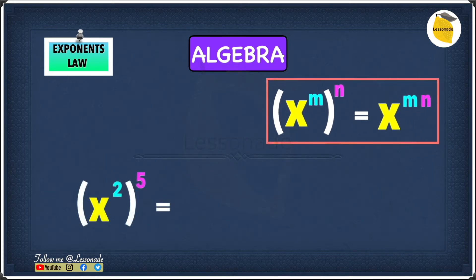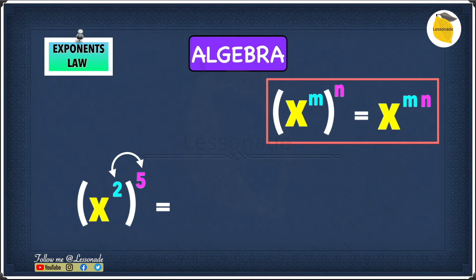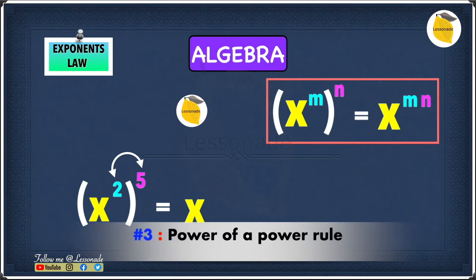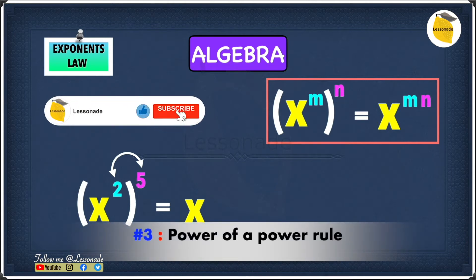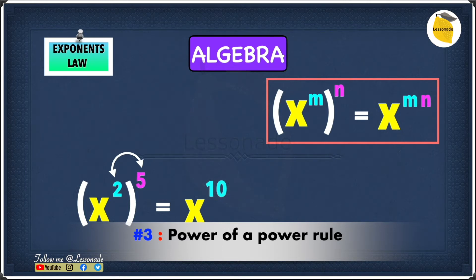For example, x raised to the power of 2, that raised to the power of 5. We have to multiply the two exponents, which are 2 and 5. Remember: keep the base the same — in this example the base is x, so the answer will also have base x. Two times five gives you 10, so we get x raised to the power of 10.